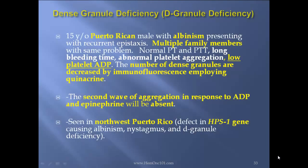Dense granule deficiency — delta granule deficiency. Case report: 15-year-old Puerto Rican male with albinism presenting with recurrent epistaxis. Multiple family members with the same problem. Normal PT/PTT, prolonged bleeding time, abnormal platelet aggregation, low platelet ADP. The number of dense granules is decreased by immunofluorescence employing mepacrine. The second wave of aggregation response to ADP and epinephrine will be absent. Seen in northwest Puerto Rico. Defect in the HPS1 gene causing albinism, nystagmus, and dense granule deficiency — this is Hermansky-Pudlak syndrome.